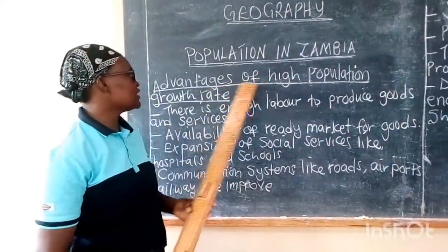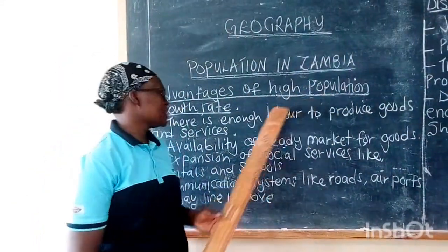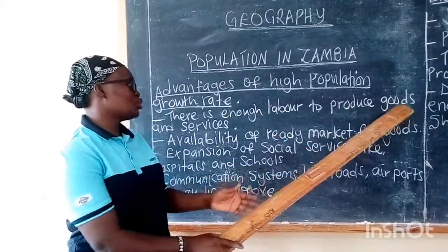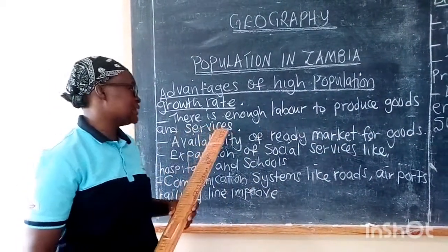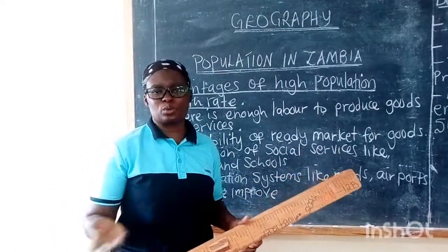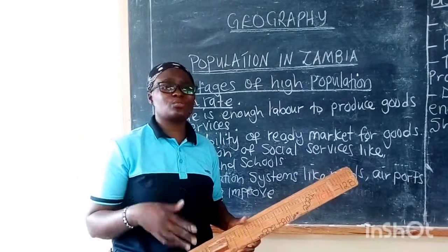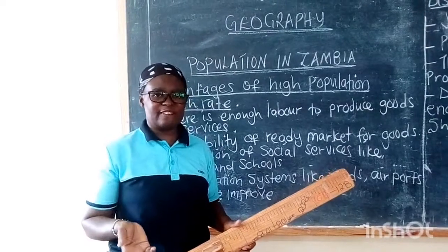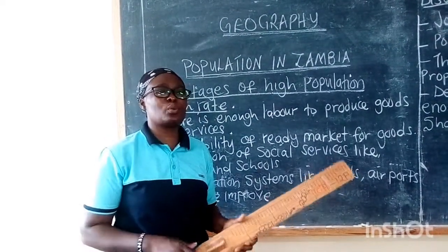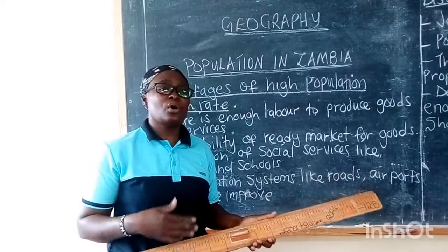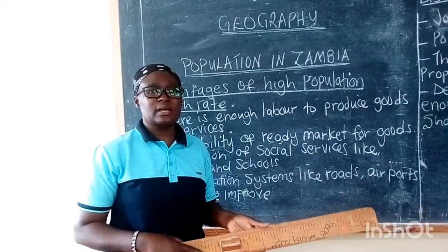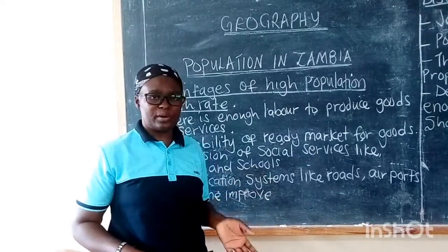Now let's look at the advantages of high population. First, there is enough labor to produce goods and provide services. When there are a lot of people in a country, you have enough people to till the land and have enough food, and also enough people to work in industries or provide services such as in banks and insurance companies.